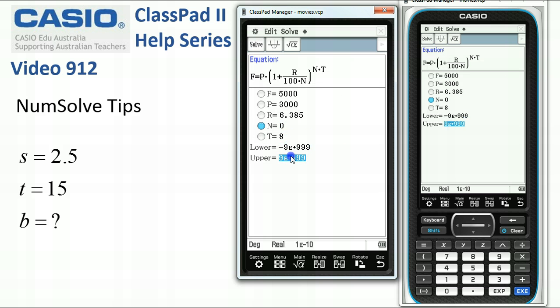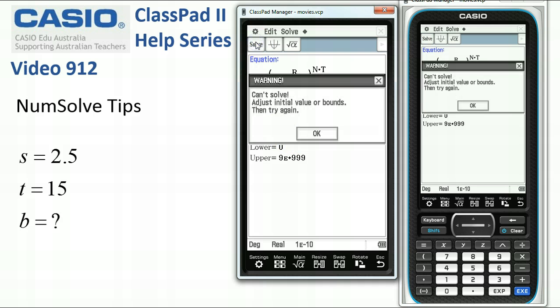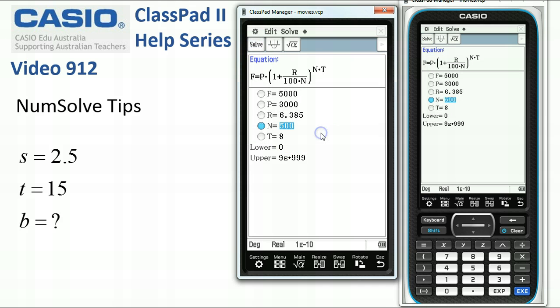So, it's saying maybe try adjusting the bands or maybe we should give it a guess. So, maybe if we put in something like 500, that might work. Or, if we know we only want a positive solution, we can tap in 0. But, I'm pretty sure if we tap solve, it's still going to say can't solve. Now, that's because of this setting at the bottom here.